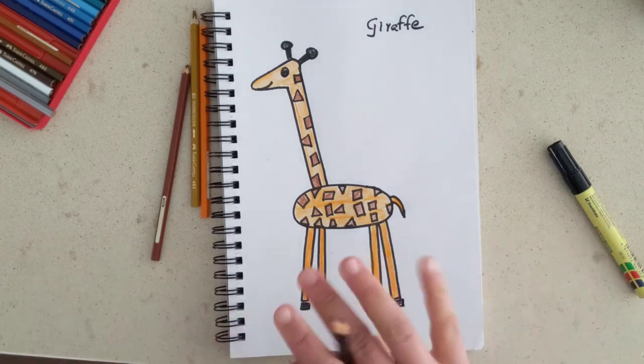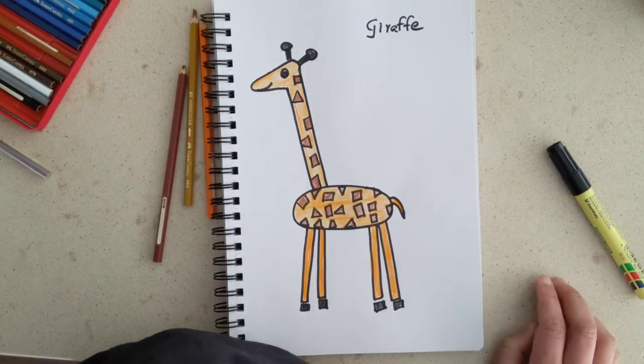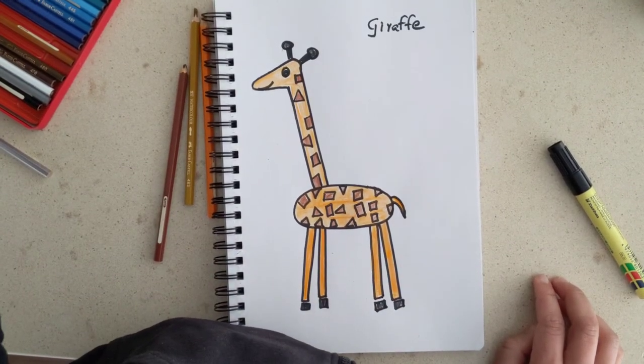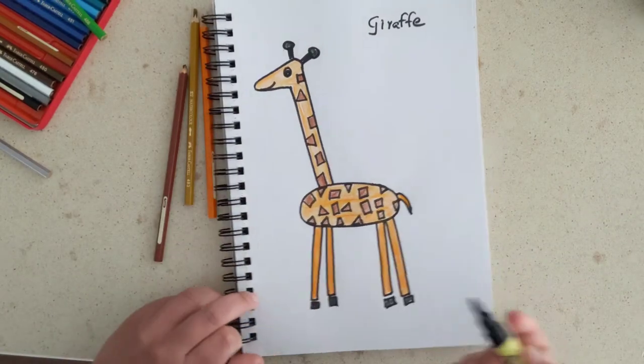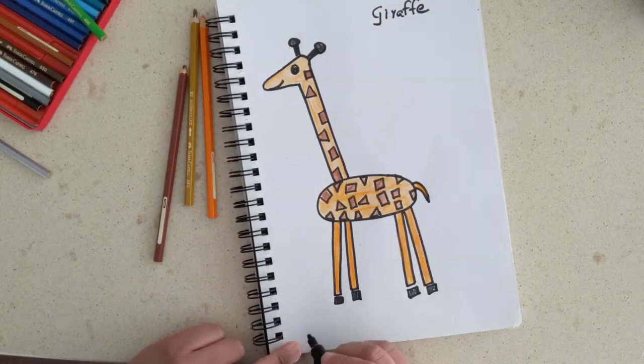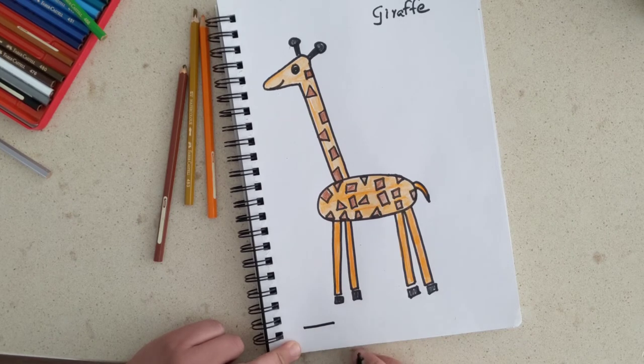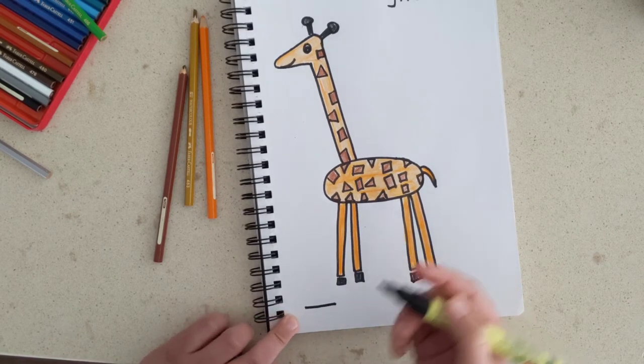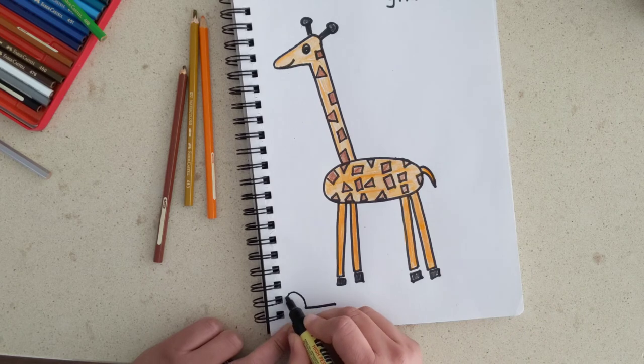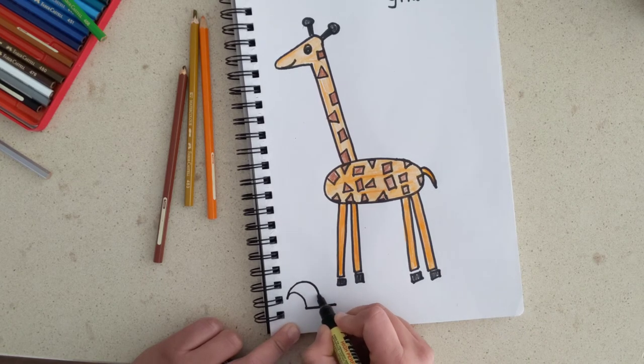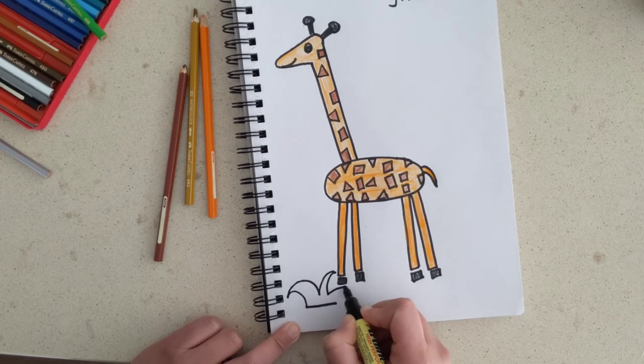Our giraffe is all done, but let's make some grass around his feet so it looks like the giraffe is in the forest. Very simple. Draw one straight line, like that, and draw three lines around it.